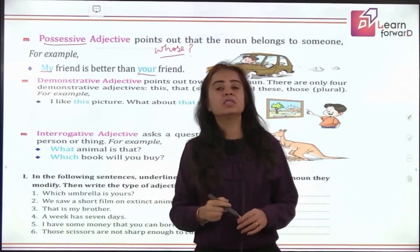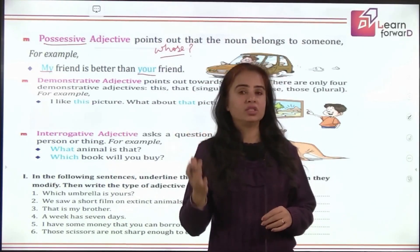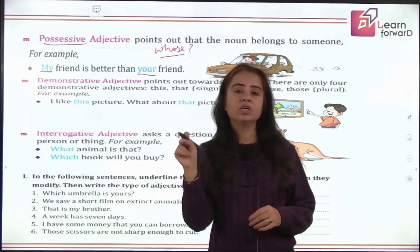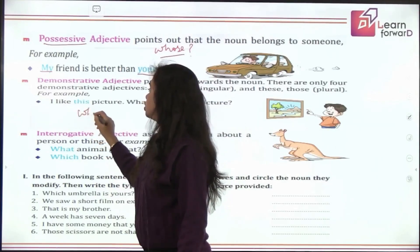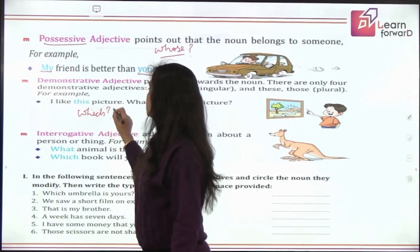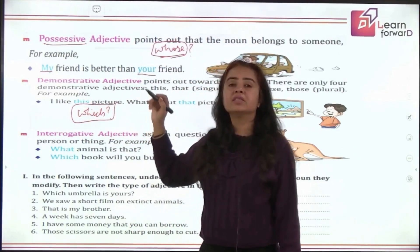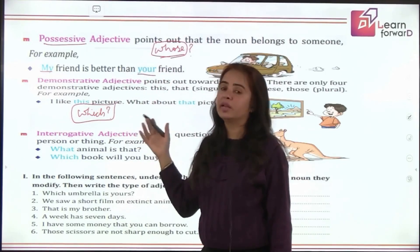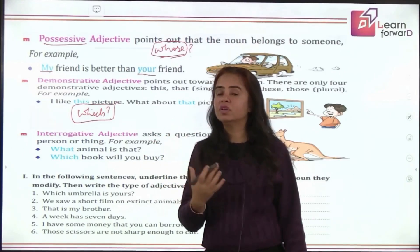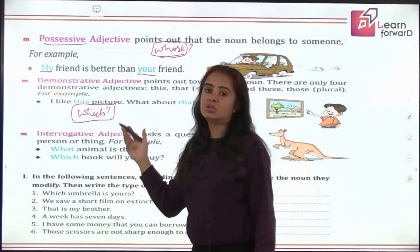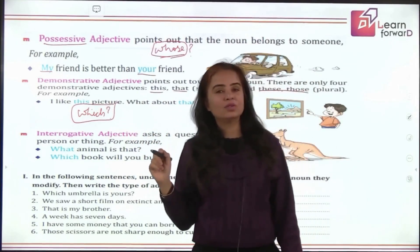Next comes demonstrative adjective. Demonstrative adjectives are pointers — they demonstrate, they show, they point out. They give an answer to the question 'which.' Remember these question words: 'whose' gives possessive adjectives, and 'which' gives demonstrative adjectives. The four words included are: this, that, these, and those. We have already done the use of these words in grade one.